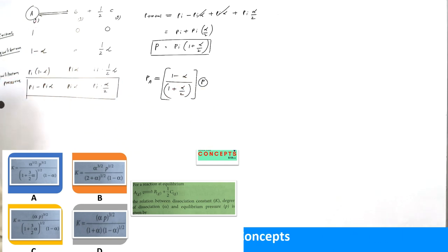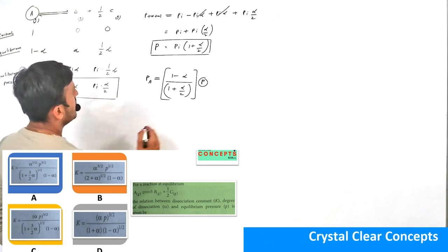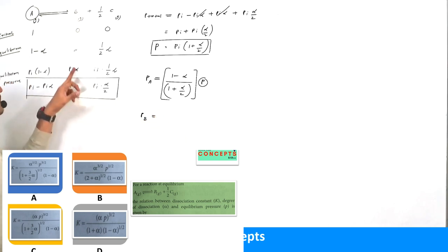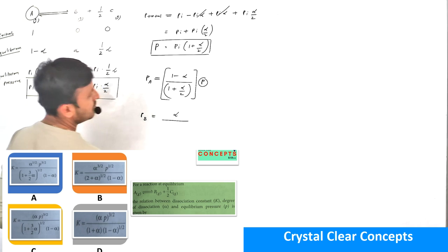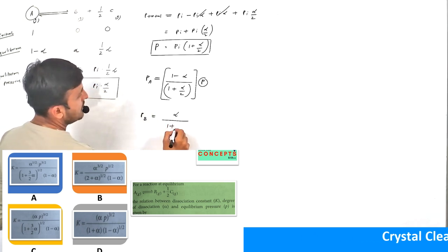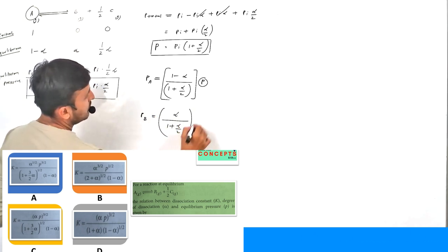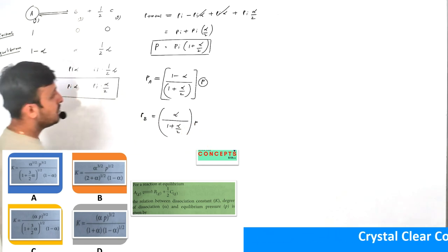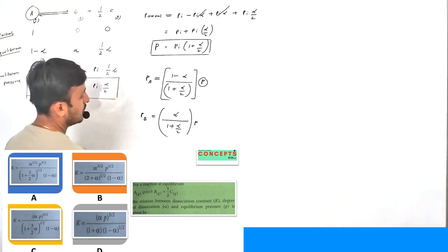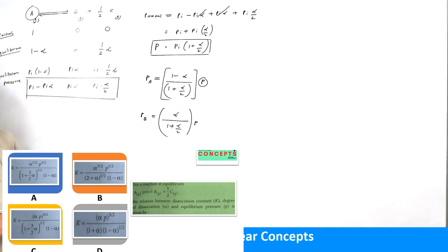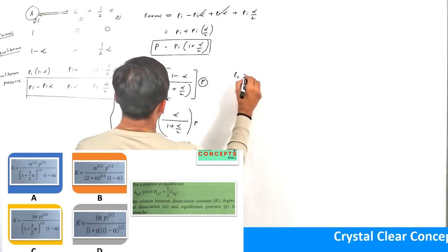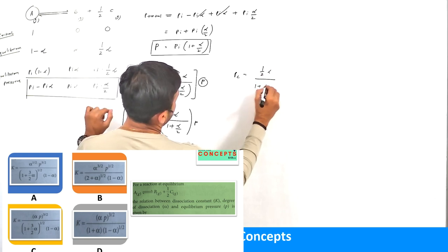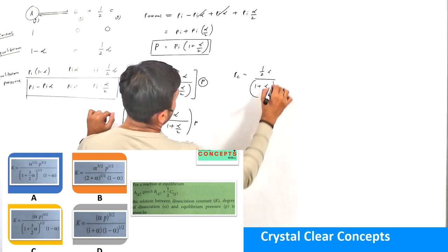The pressure of component B relative to total pressure would be: α / (1 + α/2) × P_total. And if we find PC, it would be: (1/2)·α / (1 + α/2) × P_total.